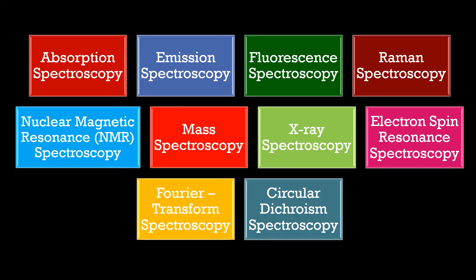Here are the major types: absorption spectroscopy, emission spectroscopy, fluorescence spectroscopy, Raman spectroscopy, nuclear magnetic resonance or NMR spectroscopy, mass spectroscopy, X-ray spectroscopy, electron spin resonance spectroscopy, Fourier transform spectroscopy, and circular dichroism spectroscopy.